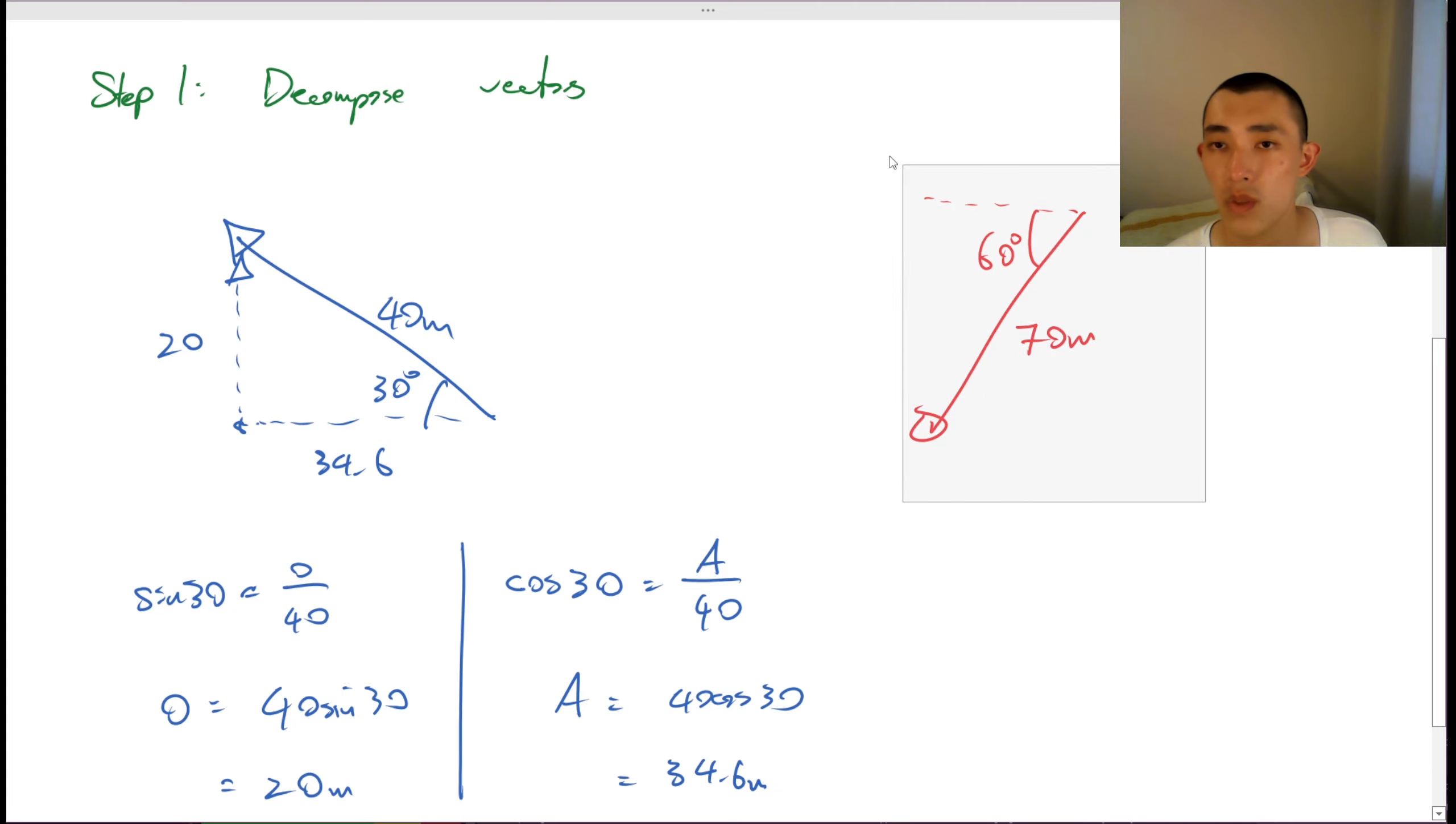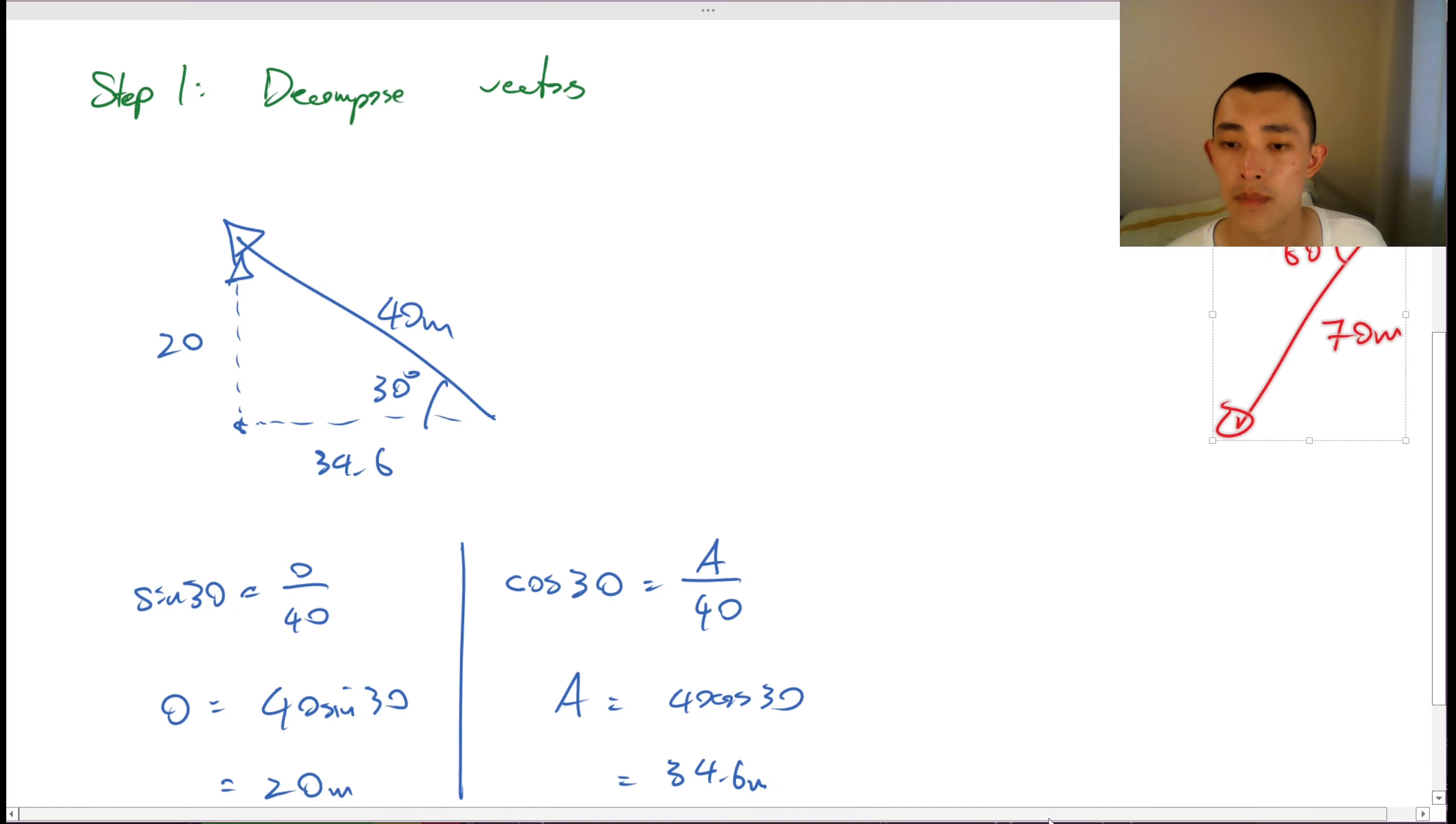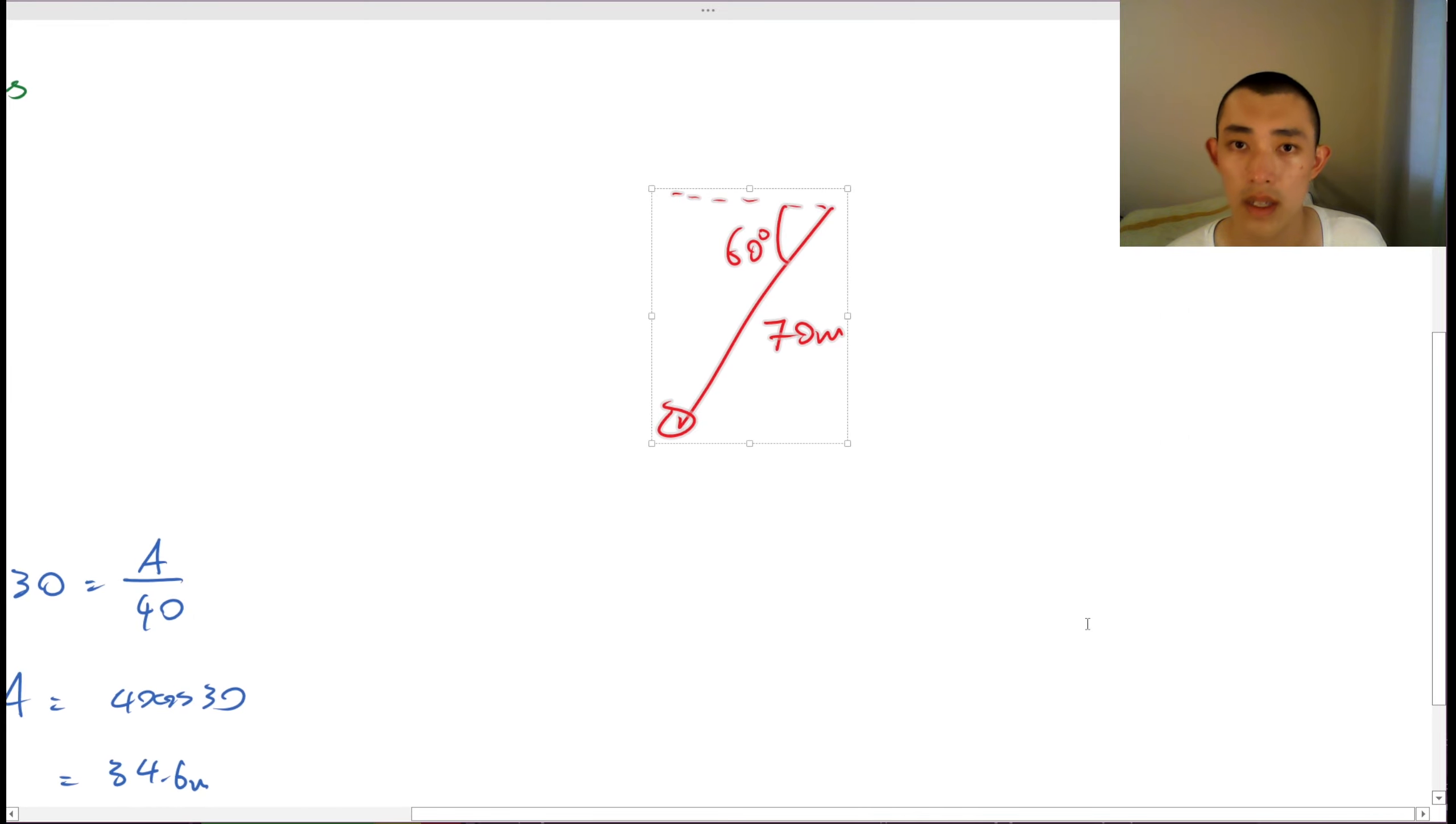Let's do the same thing for this one. Let's decompose it. So we can say that there are, again, two pieces here. It would be my adjacent. This would be my opposite. So I can say that opposite, I can say that it is going to be sine 60 is equal to opposite over hypotenuse.